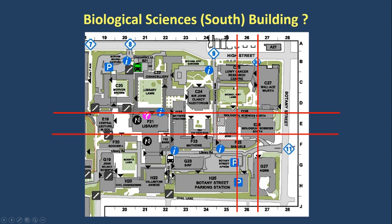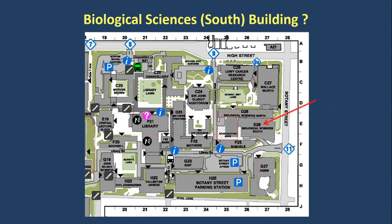Zooming in on the Biological Sciences South Building, I've highlighted the area that is the intersection of the E column and the 26 row. Part of the building is actually in E27, and bits are also in F26 and F27. We decided on E26 because that is ultimately the front entrance to the building — the way you've been coming into your classes, and once the refurbishment is finished there will be a large front entrance there. So you're directing people to the most common or most useful entry point. The delivery dock is around the back, but regardless, we're in E26 Biological Sciences South.